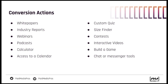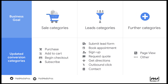Conversion actions are still conversion actions. So if somebody downloads a white paper, signs up for a webinar, enters a contest, or makes a purchase — any of these things are still individual conversion actions. The difference now is that we need to group them into specific categories, or standard and custom goals. Goals means a higher level category. There are three business goals for conversions on Google Ads: sales, leads, and further categories. And underneath, you can see the updated conversion categories that support each one.